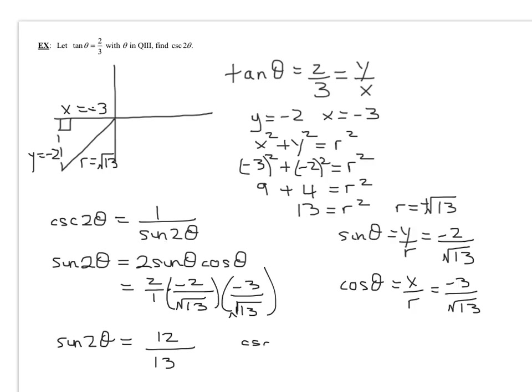So remember, the cosecant of two theta is one over twelve thirteenths. How do I take the reciprocal? You just flip it upside down. So the cosecant of two theta is 13 twelfths.